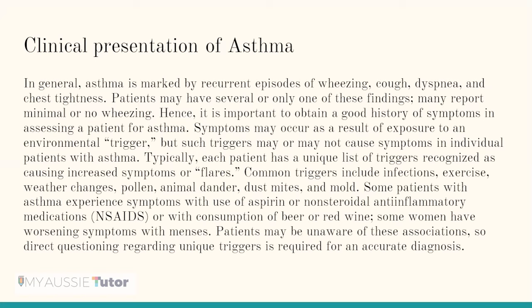The clinical presentation of asthma: what comes across to us in terms of a patient having asthma? It is marked by recurrent episodes of wheezing, coughing, dyspnea, and chest tightness. Patients may have several or only one of these findings, and many report minimal or no wheezing. Hence, it is important to obtain a good history of symptoms. Symptoms may occur as a result of exposure to an environmental trigger; each patient has a unique list of triggers causing increased symptoms or flares. Common triggers include infections, exercise, weather changes, pollen, animal dander, dust mites, and mold. Some patients experience symptoms with aspirin, NSAIDs, or consumption of beer or red wine, and some women have worsening symptoms with menses. Direct questioning regarding unique triggers is required for accurate diagnosis.